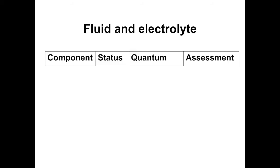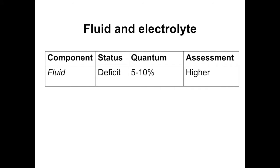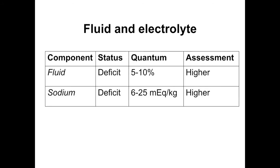Regarding fluid and electrolyte deficits: there is a significant fluid deficit of 5-10%, but we often overestimate dehydration in DKA because of rapid breathing and dry tongue, which can push us toward giving too much fluid, predisposing the child to cerebral edema. There is also a significant sodium deficit, but hyperglycemia itself causes apparent hyponatremia, so sodium must be corrected for glucose level.